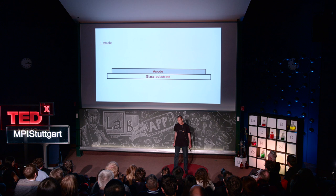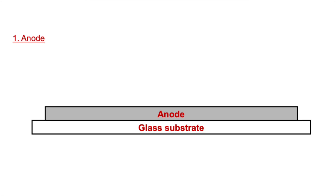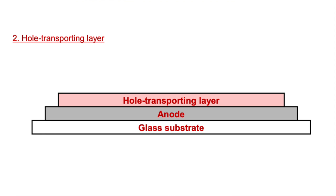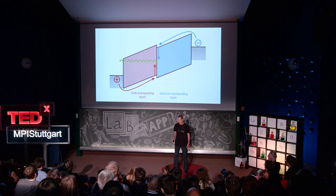The organic light emitting diode, as Tang and Van Slyke conceived it, consists of four layers deposited in sequence onto a glass substrate. The first layer is the positive electrode, which we call the anode. The second is the organic hole transporting layer, followed by the organic electron transporting layer, and finally the negative electrode, called the cathode.